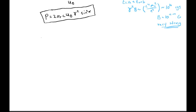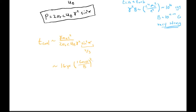Another timescale is the cooling time, set up similarly: electron energy divided by the power in the Thomson cross-section form, 2 sigma_T c U_B gamma^2 sine^2(alpha). Taking the ensemble average of sine^2(alpha) = 2/3, one factor of gamma cancels. For a magnetic field of 1 Gauss, the cooling time is of order 16 years, scaling as (1 Gauss/B)^2 and as 1/gamma.